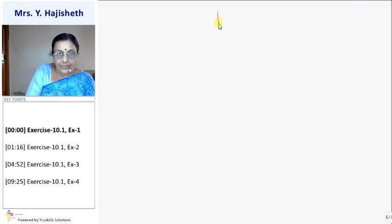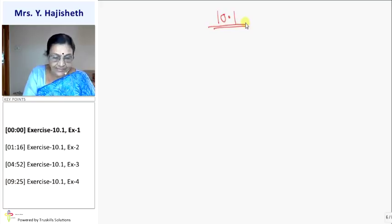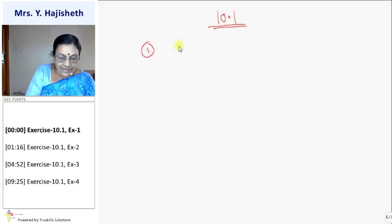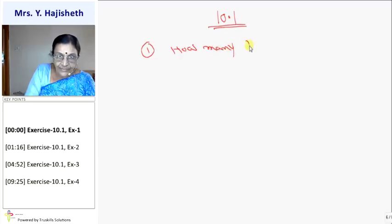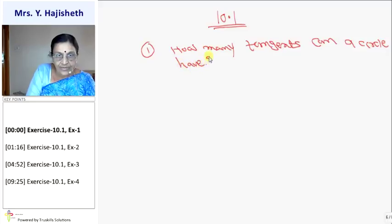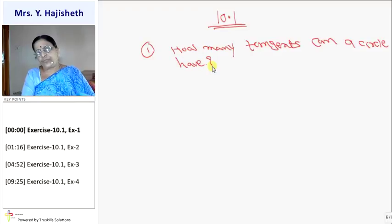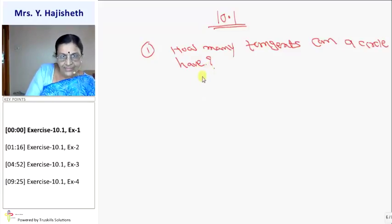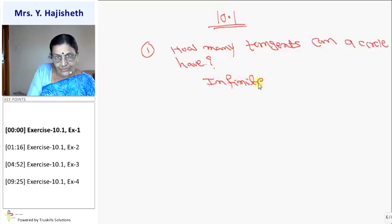All the sums of 10.1 are based on the concept of tangent. The first sum is: how many tangents can a circle have? A circle is a set of infinite points in a plane which are equidistant from a fixed point. So a circle has infinite points, and therefore it has infinite tangents — because at every point we can draw a tangent to the circle. So the answer is infinite tangents.